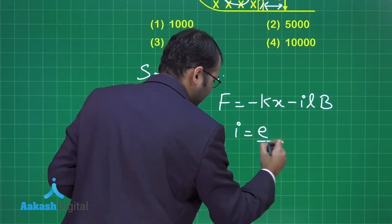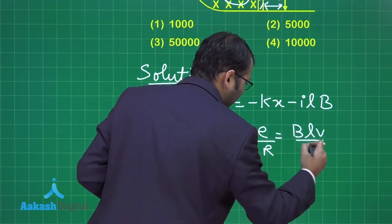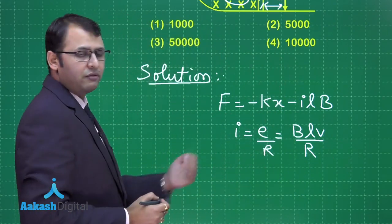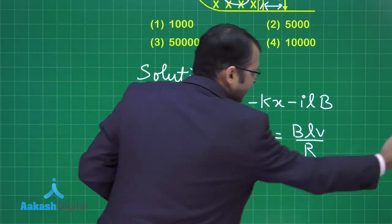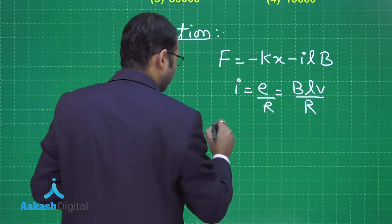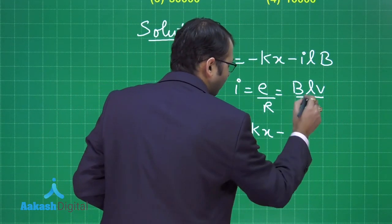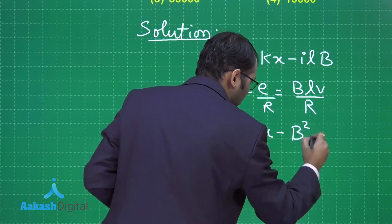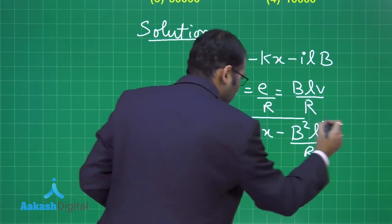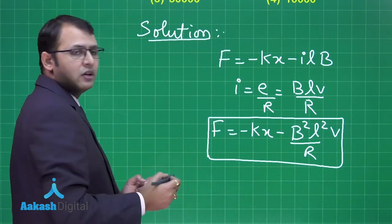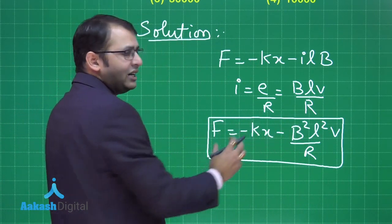The restoring force equals minus kx minus iLB. The induced current i equals BLv/R, where v is the velocity while returning to the mean position. Substituting this, the restoring force becomes minus kx minus (B²L²v)/R.